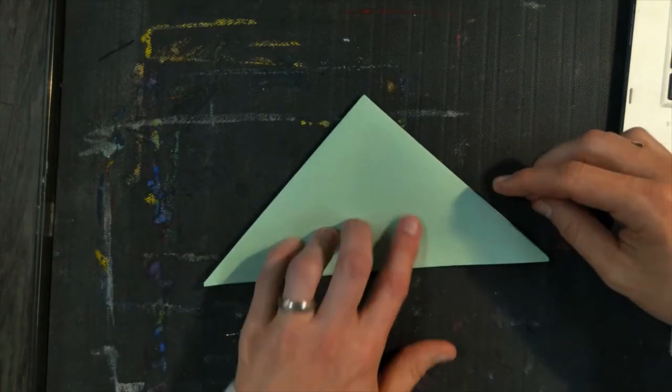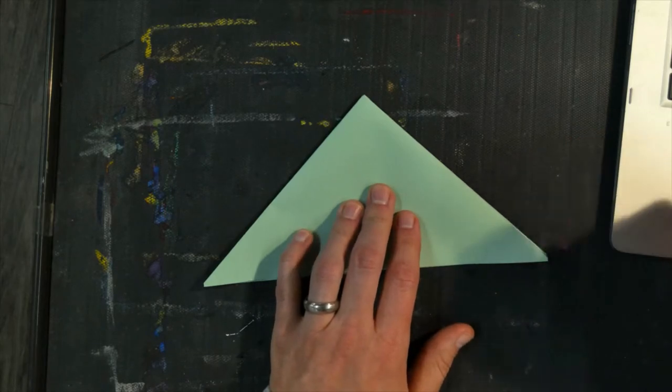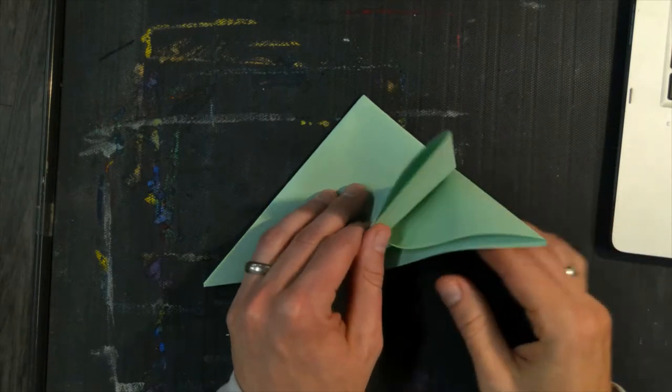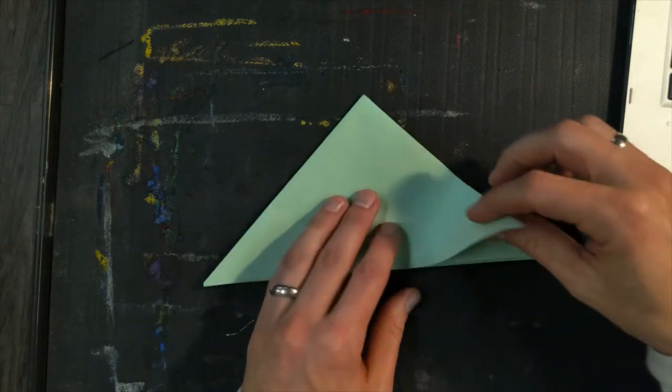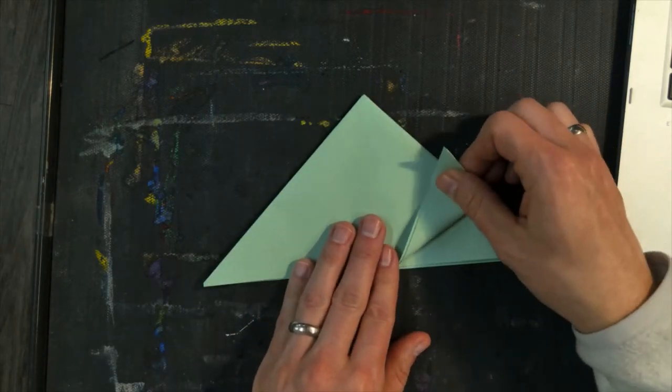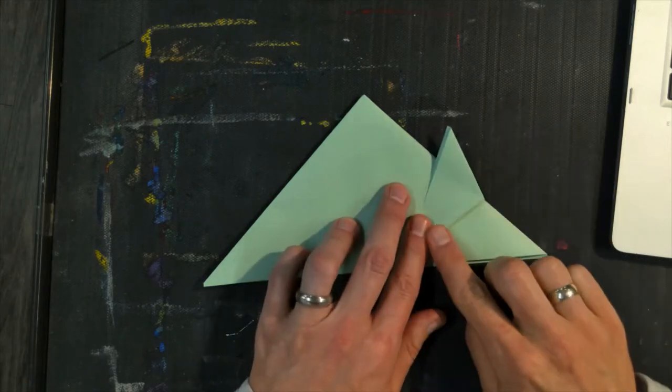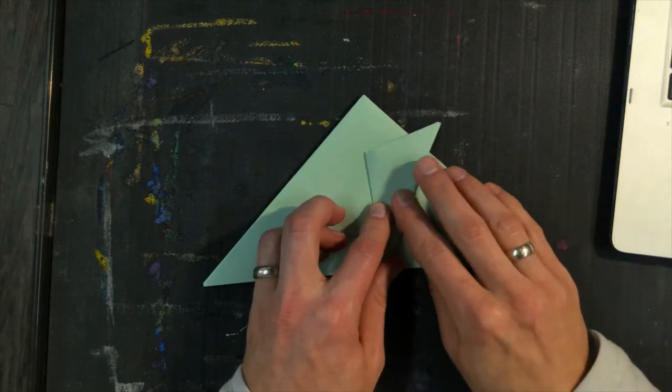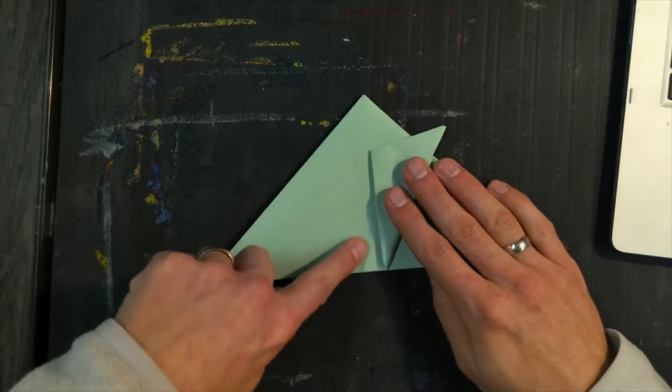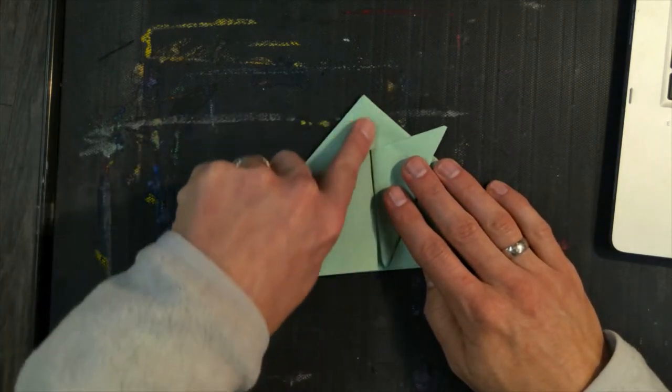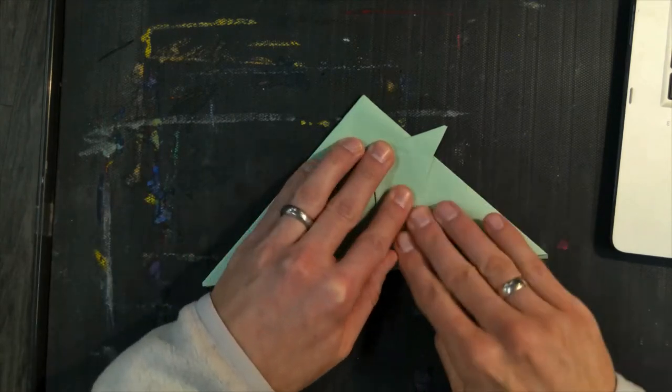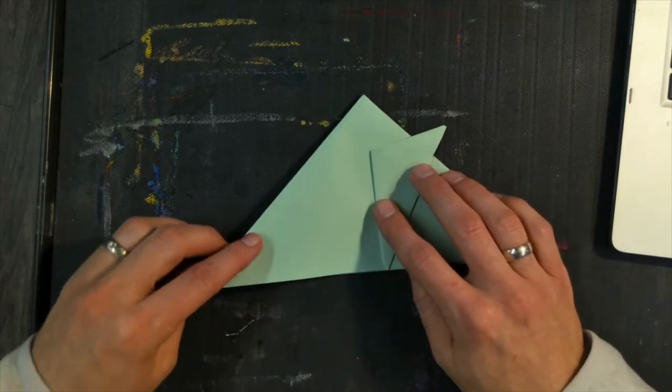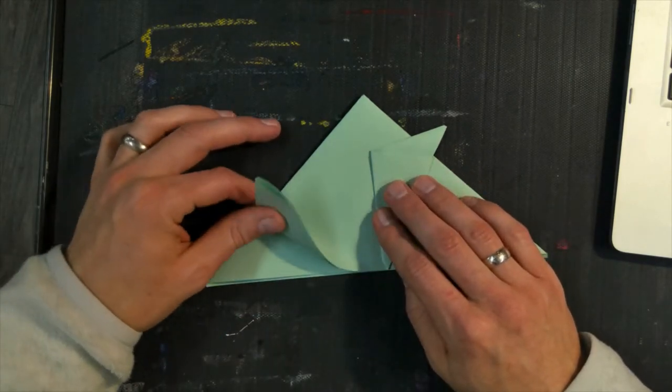All right, moving on to step three. So first we're going to make the frog's little front legs. So to do that, I'm going to take one corner, see how there's two flaps here? I'm going to take the top flap, I'm going to fold it over, and press, and fold it over again. Then, this time, this line should line up almost perfectly in the middle of the triangle, and press. So that's going to be one front leg.